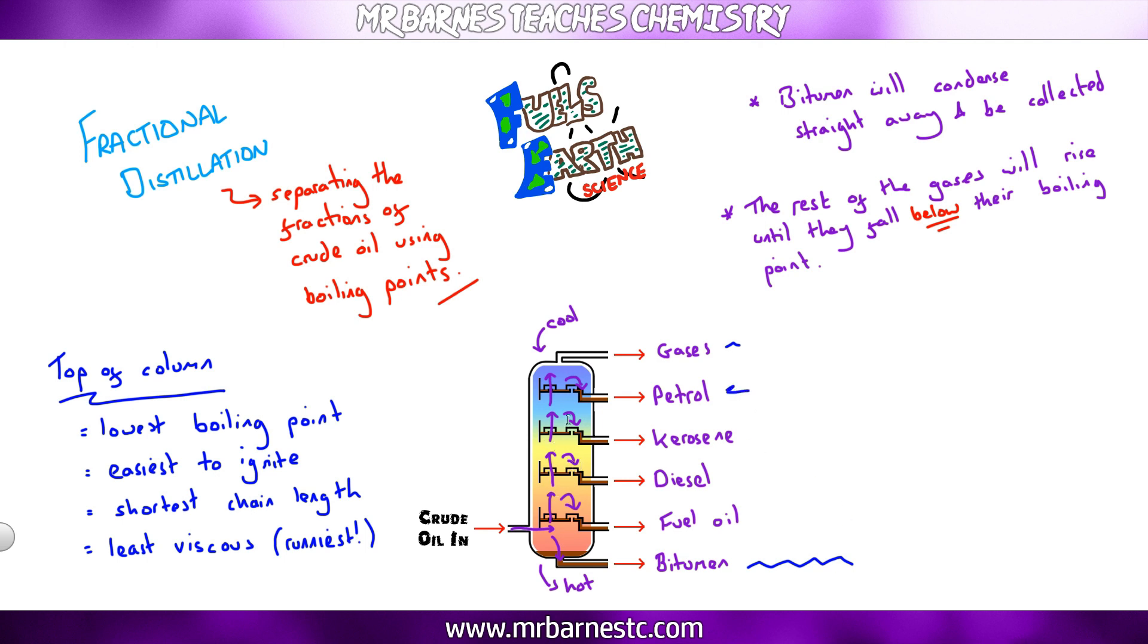So if they asked you to compare petrol to diesel and you know petrol's up near the top, you would say that has the lowest boiling point out of the two. It's the easiest to ignite out of the two. It has the shortest chain length out of the two and it's the runniest, the least viscous.